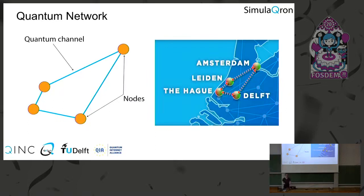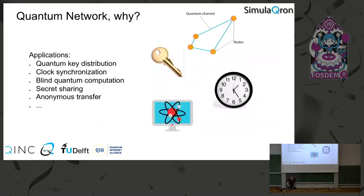You might ask why we want to build a quantum network. The reason is that we can do a lot of cool things with such a network. There are many applications. The most famous is quantum key distribution, which lets you generate keys for secure communication. But there are others: better synchronization of clocks, extending the baseline of telescopes, blind quantum computation, secret sharing, anonymous transfer, and more. For essentially all of these, what we need is entanglement.